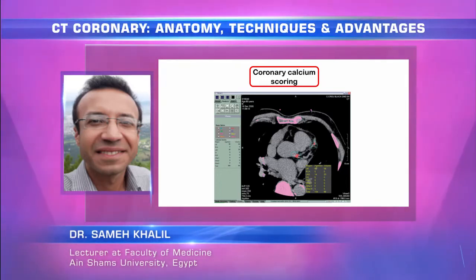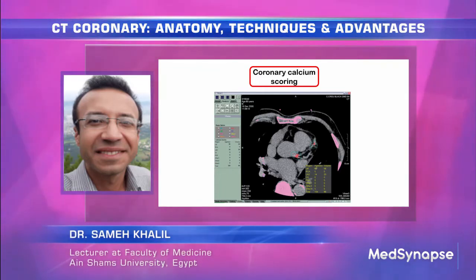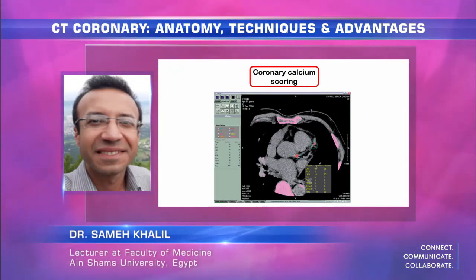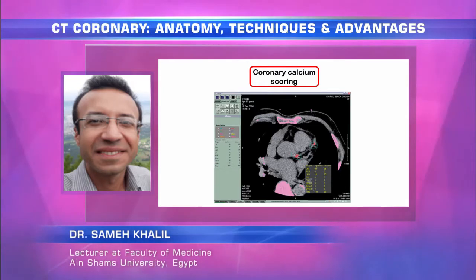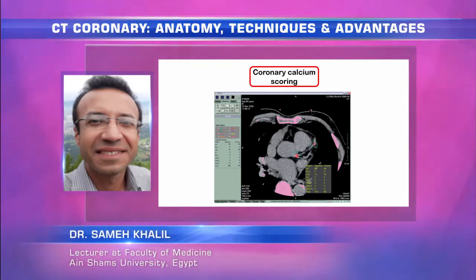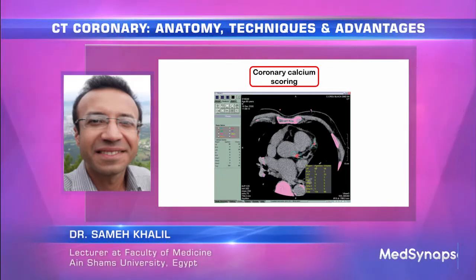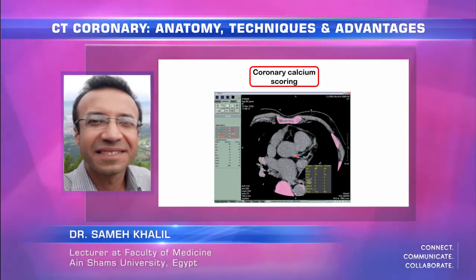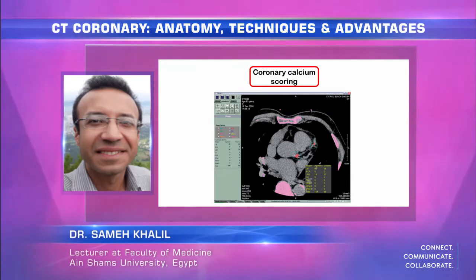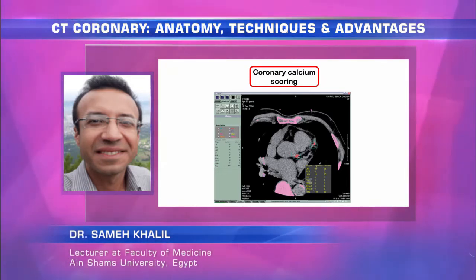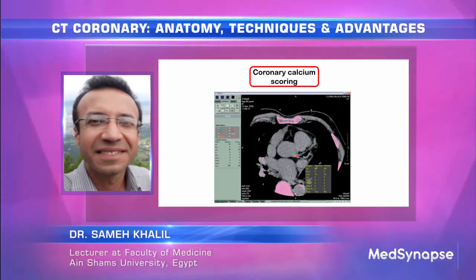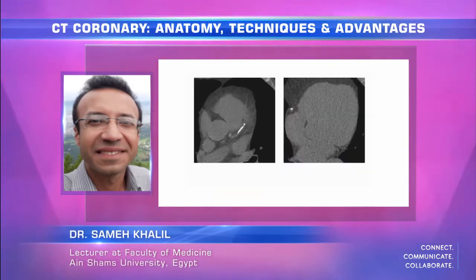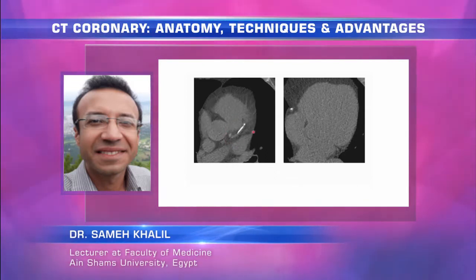We first perform calcium scoring. If the calcium score is very high — beyond 1000 — there is no need to inject contrast; this patient clearly has significant plaque and should be referred directly for catheterization. A low calcium score does not mean the patient is free of disease, because we have what is called soft plaque, which can be significant even with a zero calcium score. Calcium scoring also helps exclude extracardiovascular causes of chest pain.